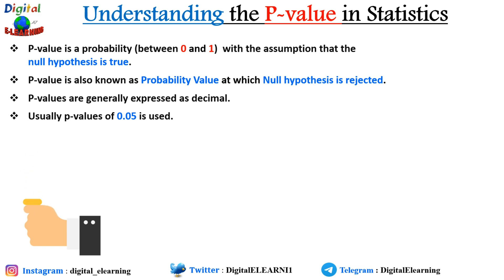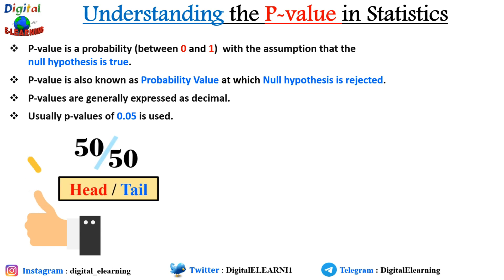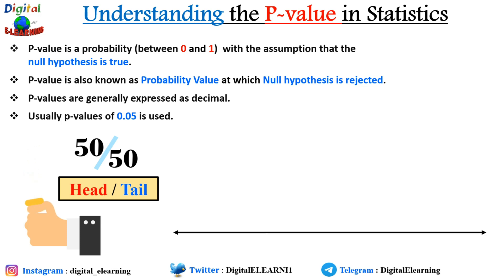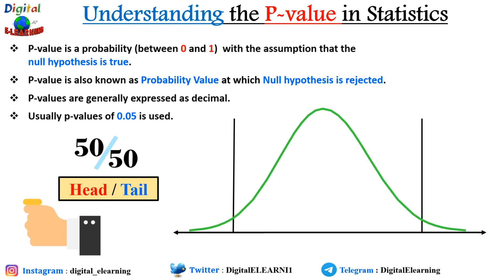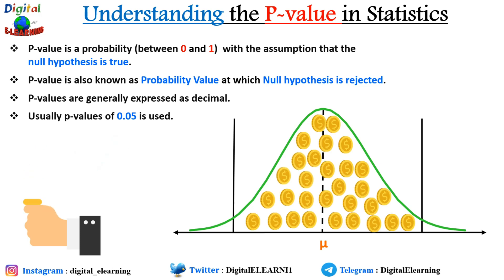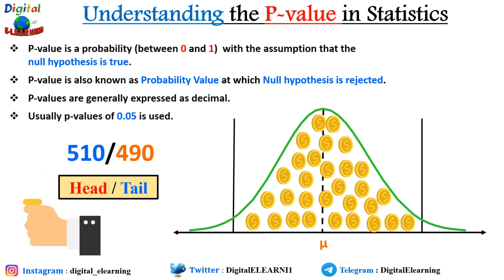Let's say an experiment is performed to determine if a coin flip is fair or not. When you flip the coin, you have an equal probability of getting a head or tail — that is, 50/50 or 0.5. Now suppose if you flip the coin 1,000 times, it follows a normal distribution curve, and on average we would expect to have 500 tails and 500 heads.